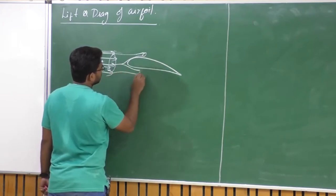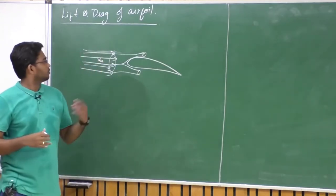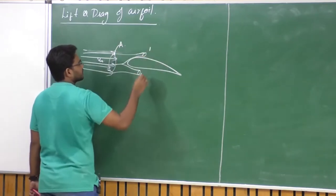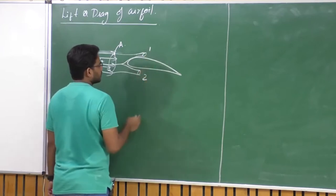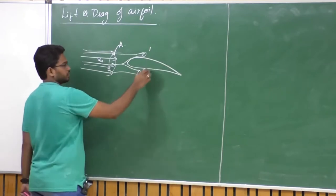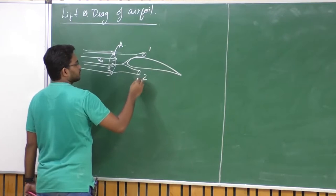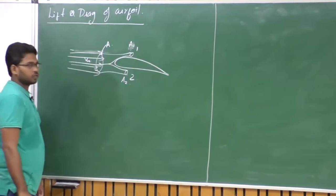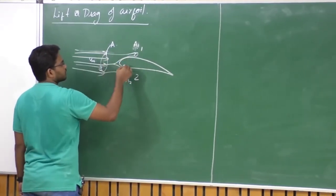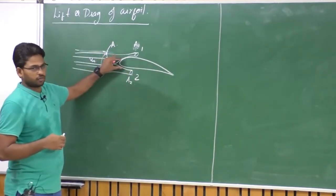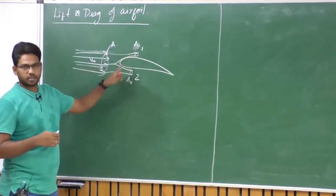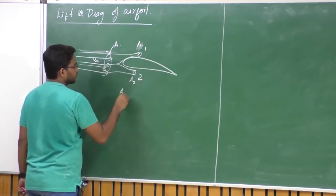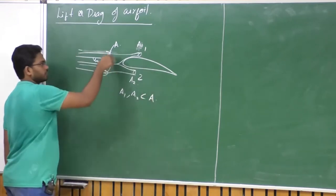There are many other explanations for how lift is generated; this is one that I believe is more realistic. Let the initial cross section area of the stream tube be A. On the top surface, let one be the portion above the airfoil and two be the portion below. The corresponding areas are A1 and A2. Because of the presence of this body, the flow gets split, resulting in a reduction in cross section area above and below the airfoil. So A1 and A2 are less than the area of the parent stream tube.